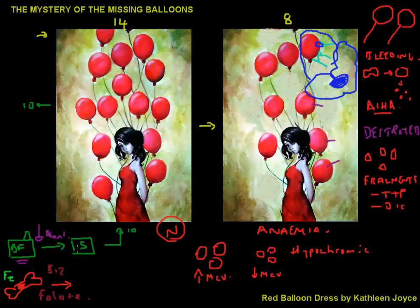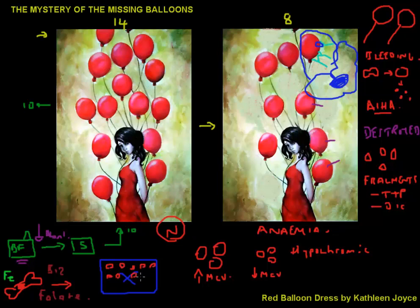One less common cause relates to the storage component — analogous to storing balloons before delivery. In the body, this can happen when the spleen enlarges. The spleen functions like a parking lot or storage space: the bigger the spleen, the more red blood cells find 'parking spots' there and get stuck. The number of red cells in circulation decreases, which can also lead to anemia — a condition called hypersplenism.